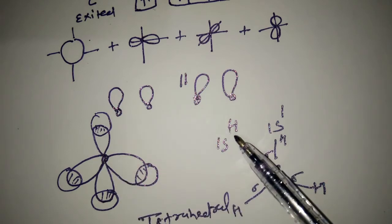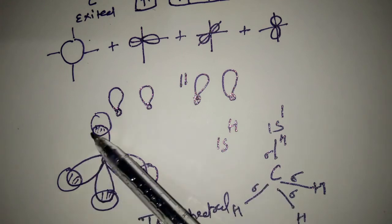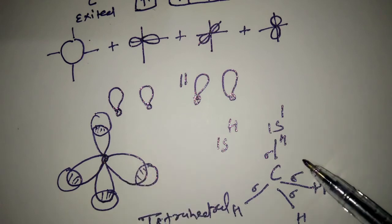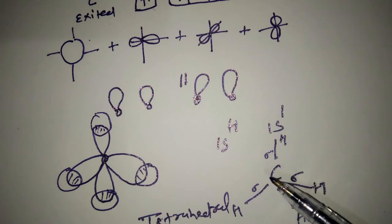Hydrogen 1s orbital shares one electron with this hybrid orbital and forms tetrahedral structure, methane, having four sigma bonds.